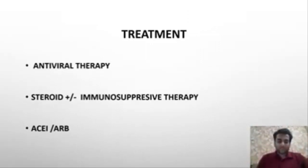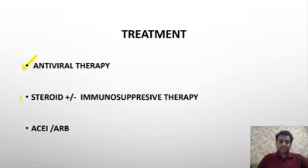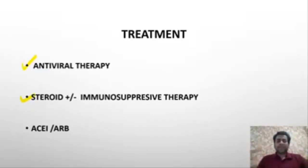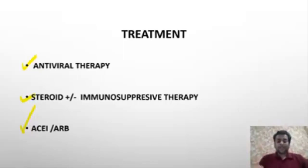Regarding treatment: since hepatitis B association is common, the mainstay when associated with hepatitis is antiviral therapy. If not associated with hepatitis, we give immunosuppression in the form of steroids plus or minus immunosuppressive agents such as cyclophosphamide, methotrexate, or azathioprine, depending on the number and degree of organ involvement. To address renal ischemia-related hypertension, we give ACE inhibitors and ARBs, with caution regarding hyperkalemia and deteriorating renal function. Thank you very much.